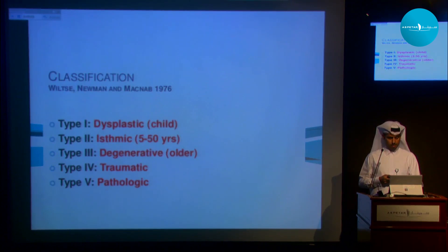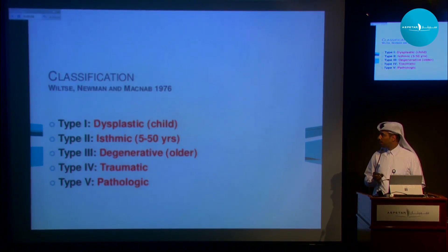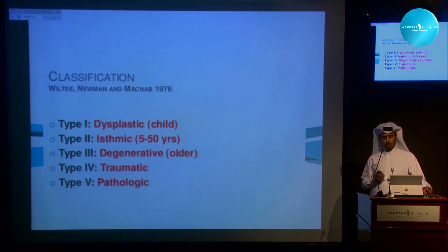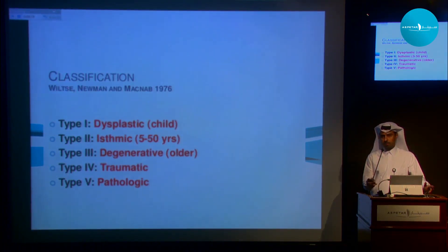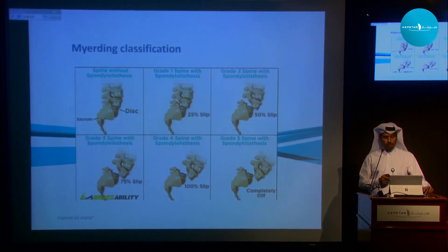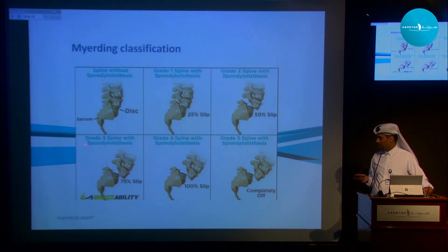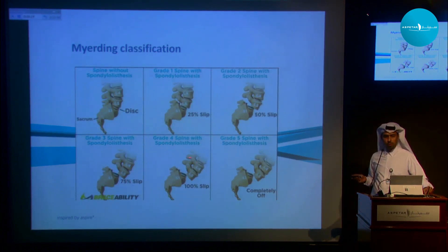There are many ways to classify it. The most common classification is according to pathology: Type 1 is dysplastic, Type 2 is isthmic, Type 3 degenerative, Type 4 traumatic, Type 5 pathologic — possibly due to a tumor. The Meyerding classification grades it by amount of slip: 0-25% is Grade 1, 25-50% Grade 2, 50-75% Grade 3, over 75% Grade 4, and complete dislocation is Grade 5.